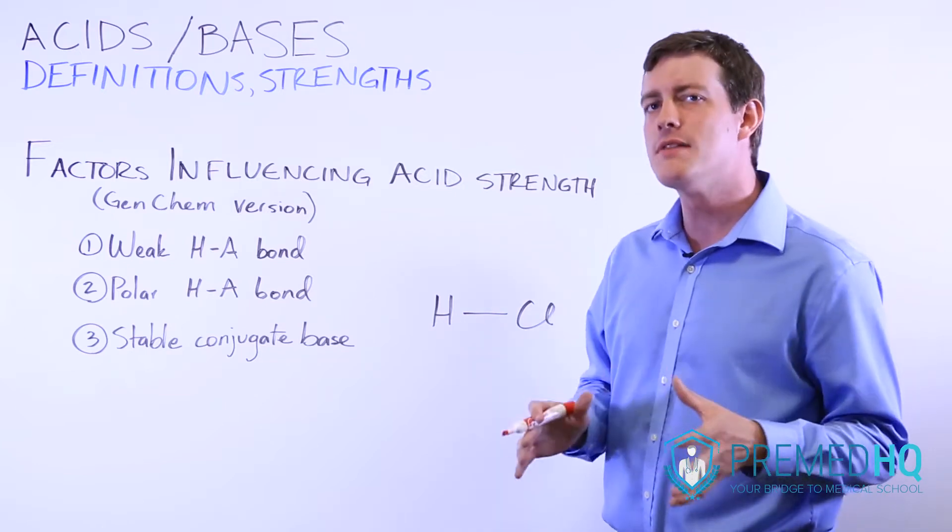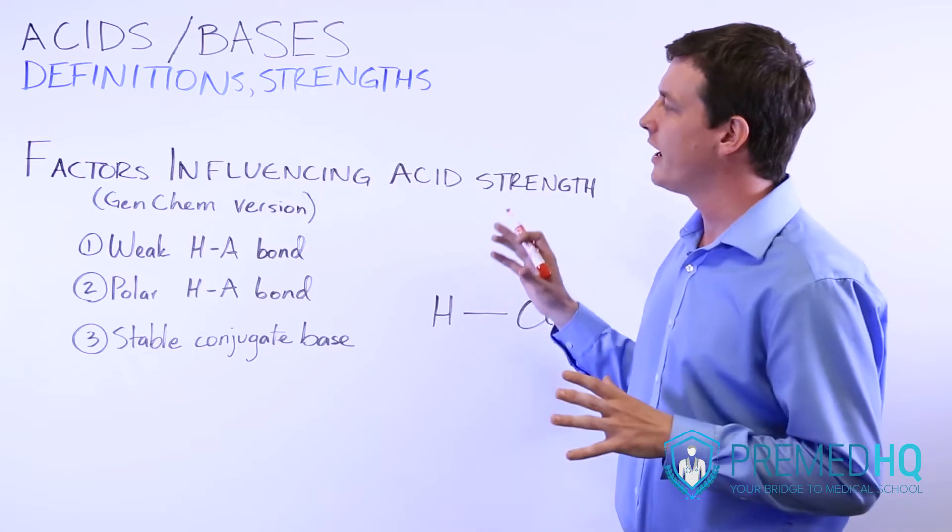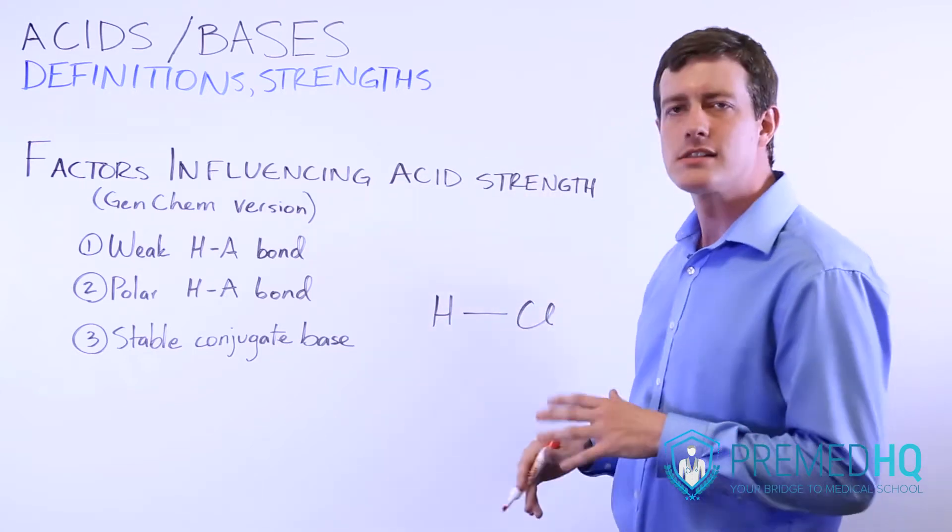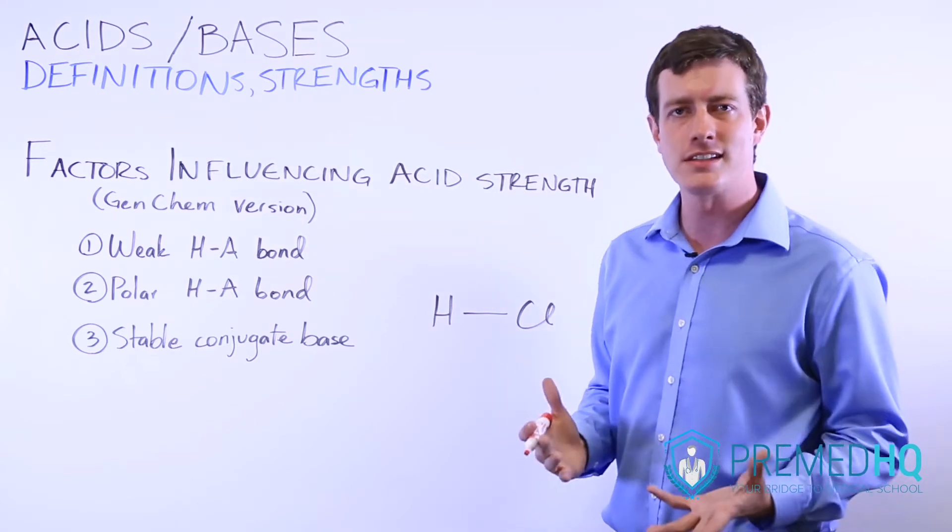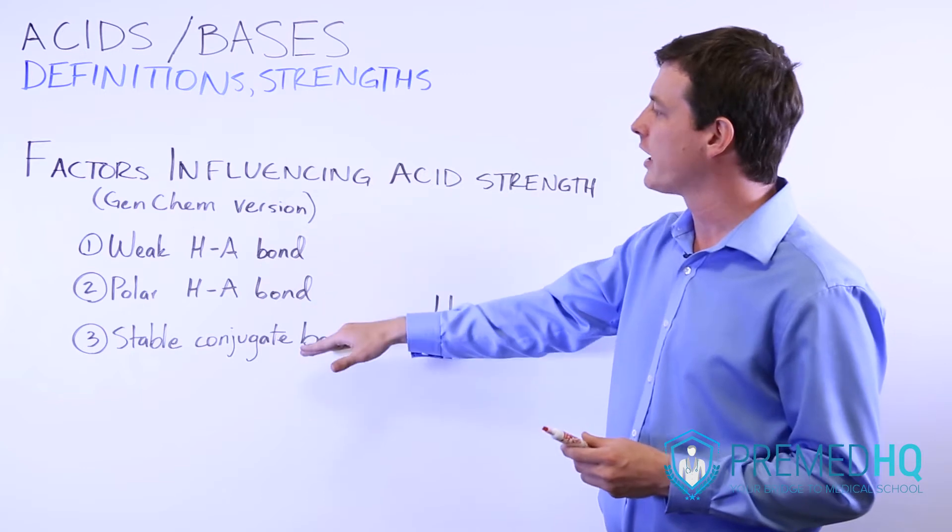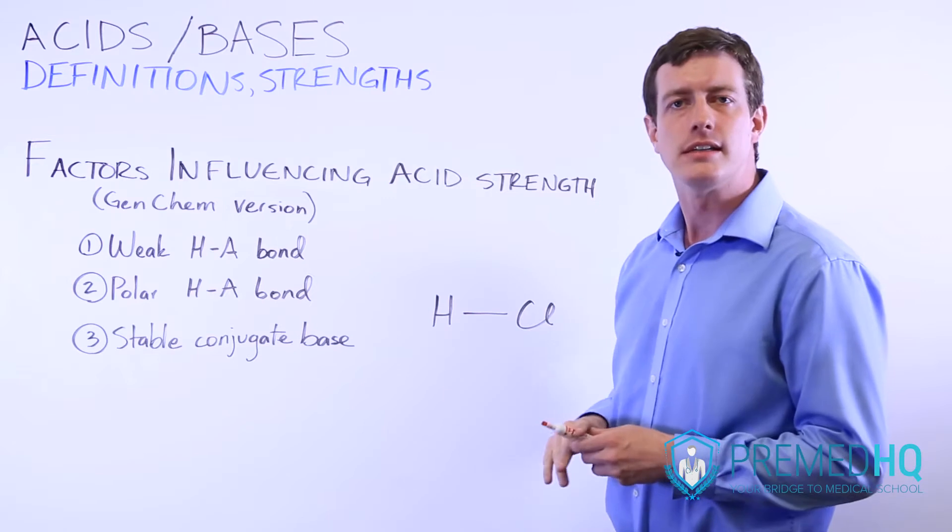However, for Gen Chem it is useful to understand in a fairly basic way how certain parts of the structure of these bonds can influence how strong an acid is. There are three main factors that you should recognize for things that increase the strength of an acid, and these are all somewhat related.